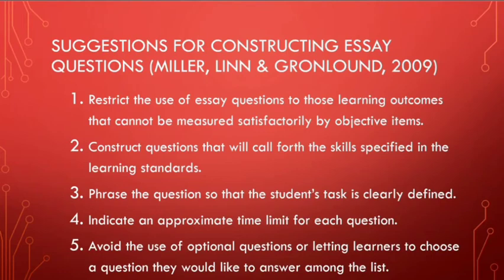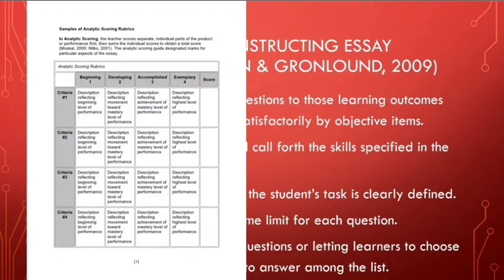On your screen you see an example of analytic scoring using a rubric. We have criterion one, criterion two, criterion three, and criterion four — you can specify these as grammar, organization, content, and overall impact. You assign percentages, and the legend shows: one point for beginning level, two points for developing, three points for accomplished, and four points for exemplary, with specific descriptions for each level to guide your scoring.